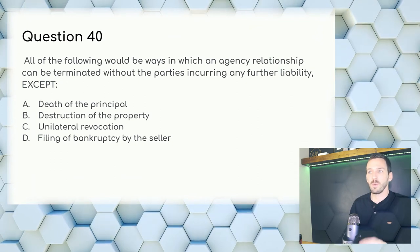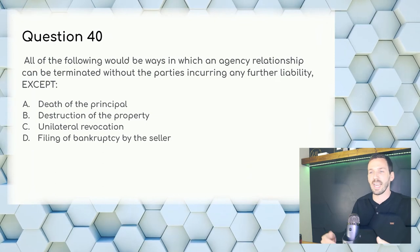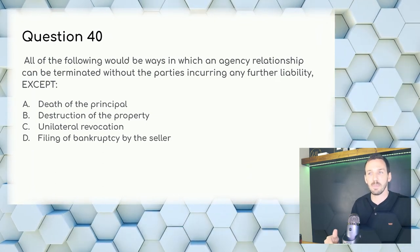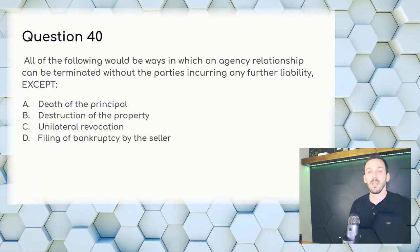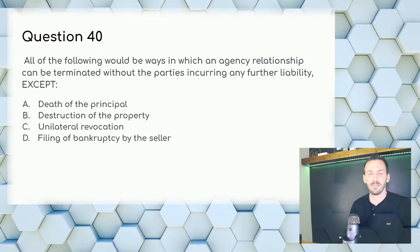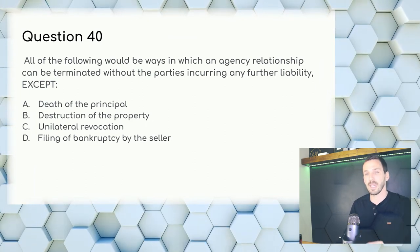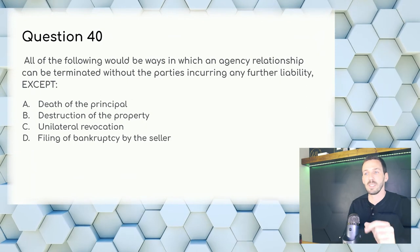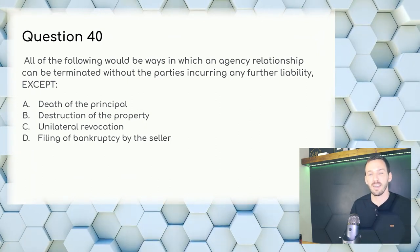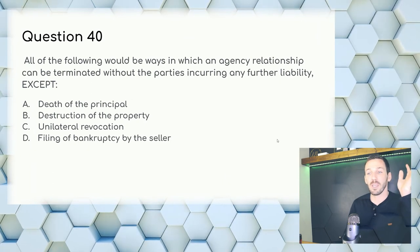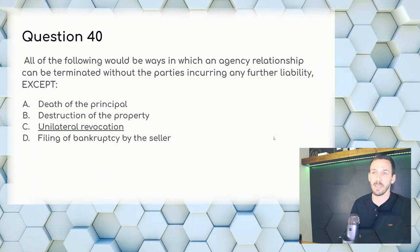Question 40: All of the following would terminate an agency relationship without further liability except — death, destruction, and bankruptcy get someone off the hook. But unilateral revocation — where only one party decides to terminate — is the exception. Answer: C, unilateral revocation.